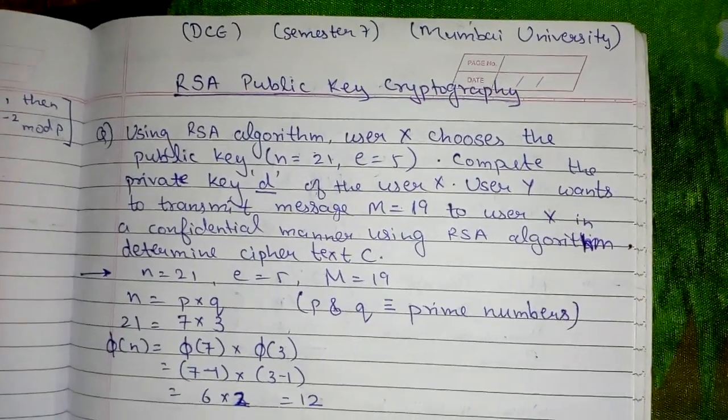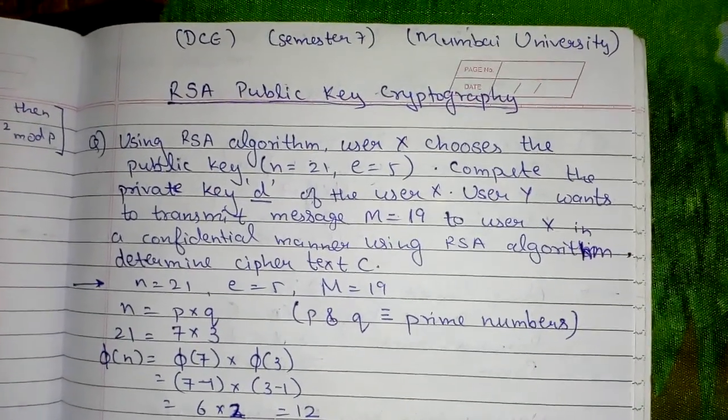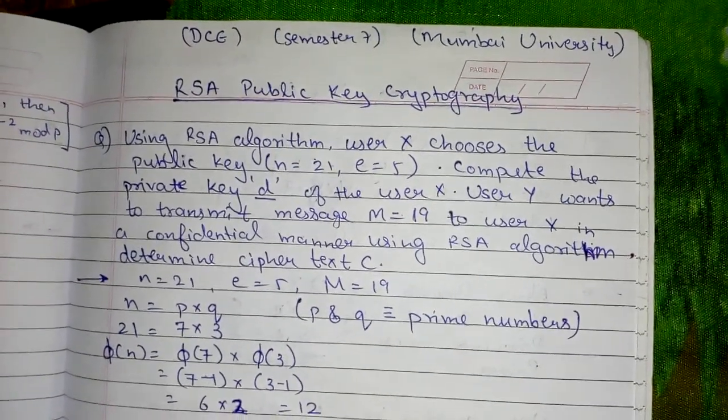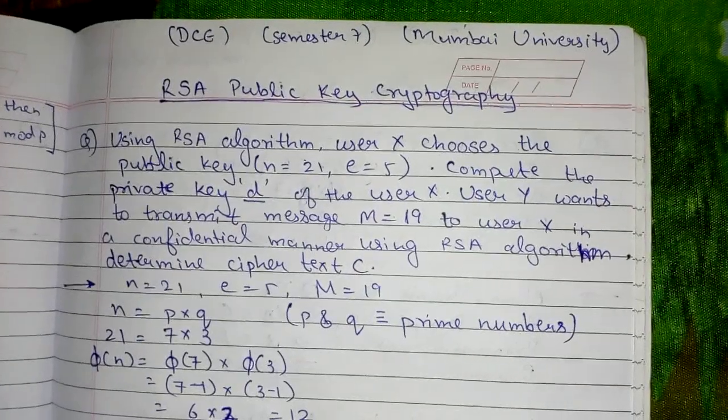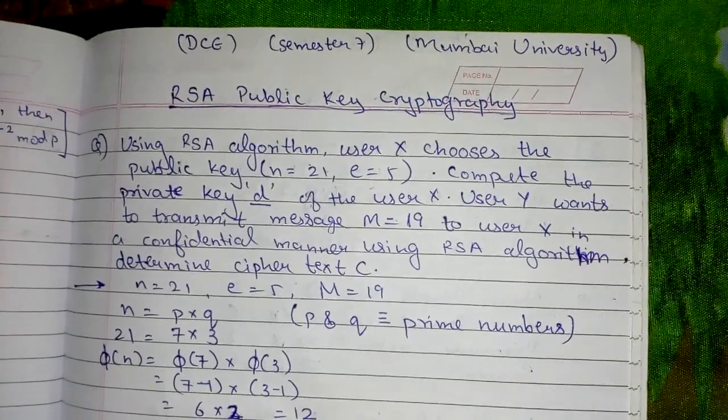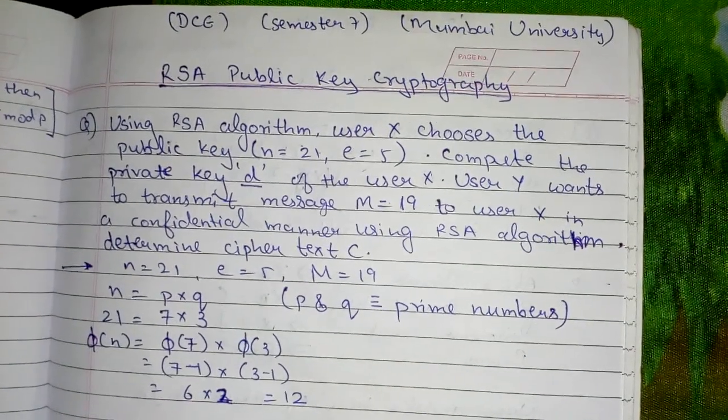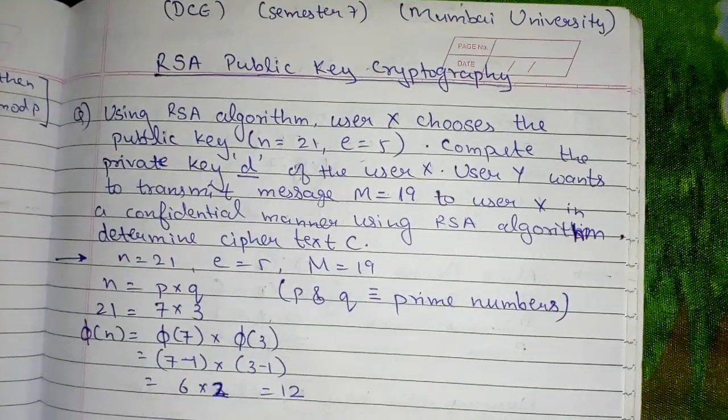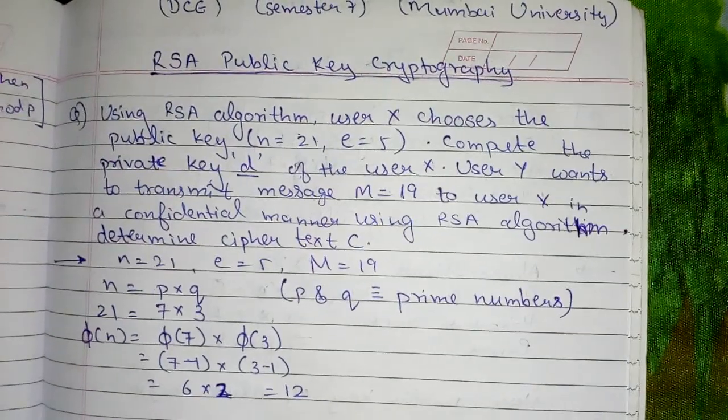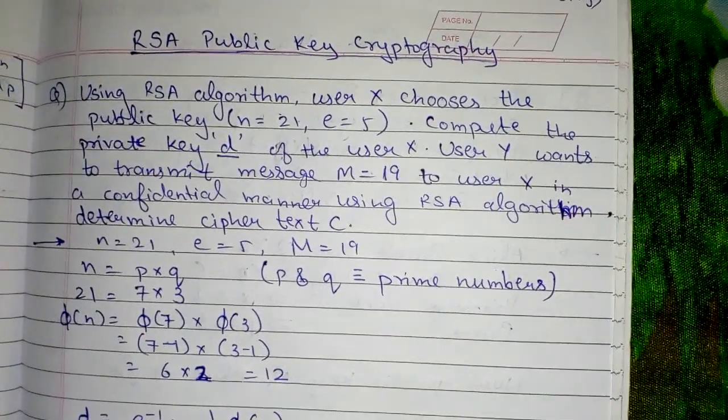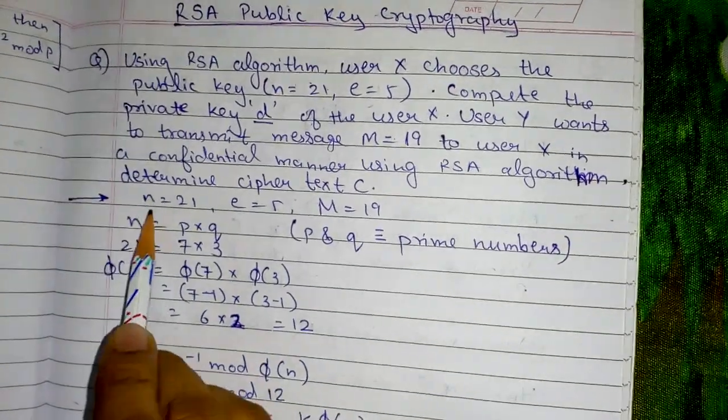Hello everyone, in this video we are going to look at RSA public key cryptography. The question is: using RSA algorithm, user X chooses public key n=21, e=5. Compute the private key D of user X. User Y wants to transmit message M=19 to user X in a confidential manner using RSA algorithm. Determine the ciphertext C. We are given n=21, e=5, and M=19.